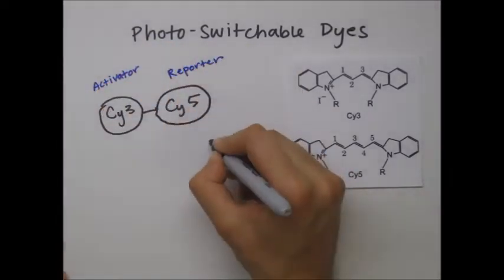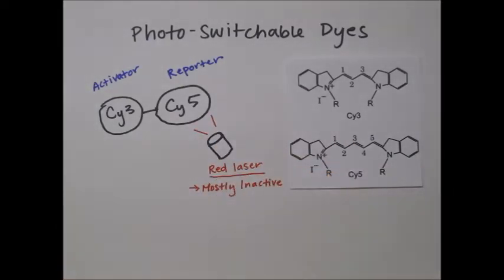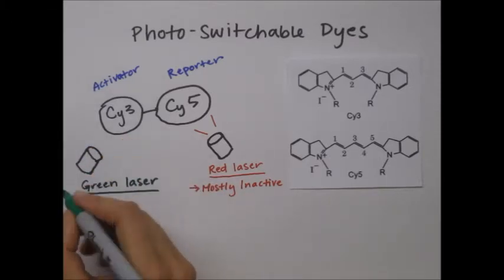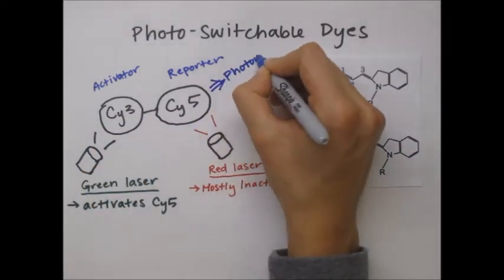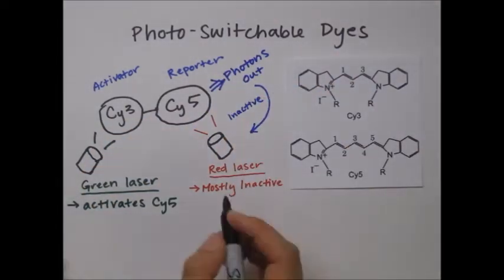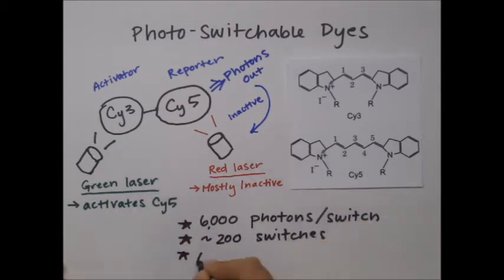When under a low-powered red laser, Cy5 has a low chance of becoming activated, but mostly remains in its inactive state. However, when Cy3 is activated by a green laser, Cy5 is triggered and emits a series of photons before returning to its dark state. This pair of dyes are very bright and can be switched on and off hundreds of times before permanently photobleaching, which makes them ideal dyes for STORM imaging.